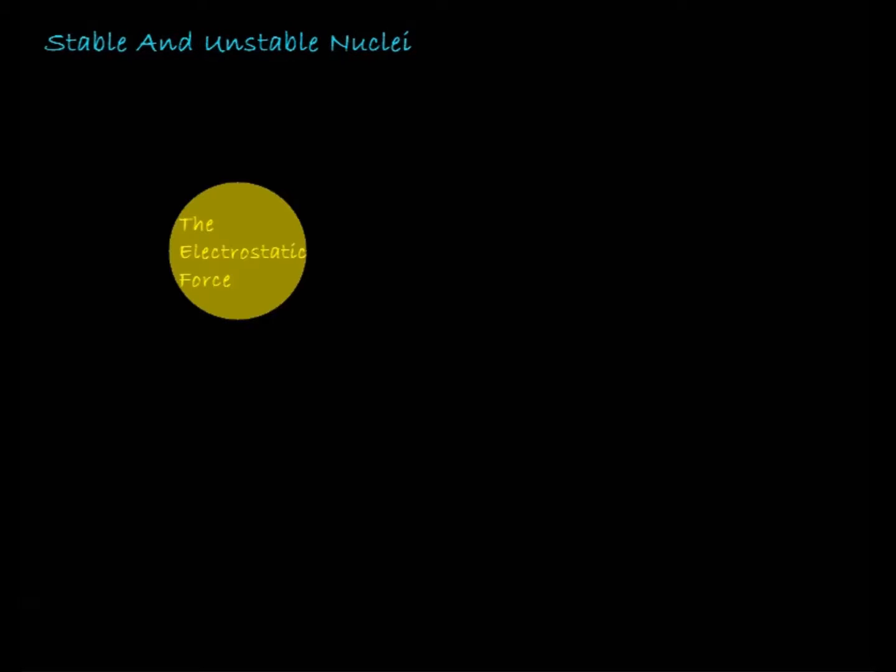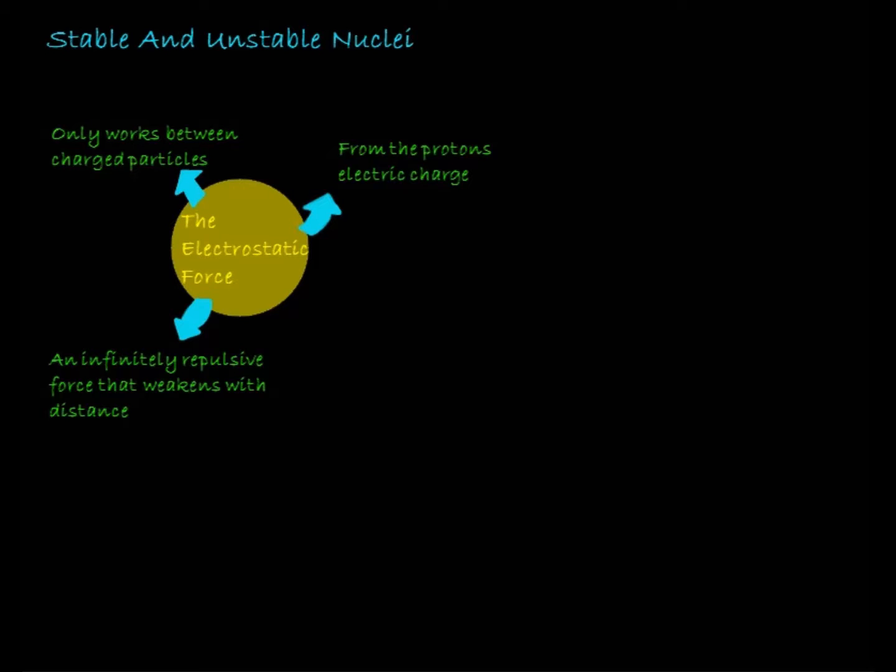There are many forces acting on a nucleus. The electrostatic force comes from the proton's electric charge. It's an infinitely repulsive force that weakens with distance. And it's this force that logically would cause the nucleus to blow apart. So why doesn't it?